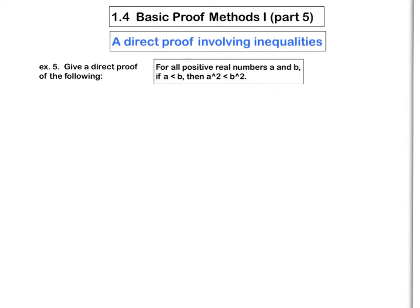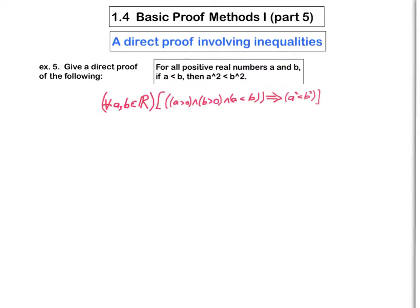The first thing I always like to do is write the thing out in symbols. Why don't you put the video on pause and see if you can write it out in symbols, and see if you can tell me what the first two sentences of the proof should be. Here it is written in symbols: for all real numbers A and B, if A is positive and B is positive and A is less than B, then A squared is less than B squared. The universal set is the real numbers, and the hypothesis doesn't just consist of A less than B, but also the fact that both A and B are positive.